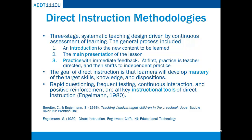The initial direct instruction model by Veriter and Engelman established a three-stage systematic teaching design driven by continuous assessment of learning. The general process included an introduction to the new content to be learned, the main presentation of the lesson, and practice with immediate feedback. At first, practice is teacher-directed, with the entire class responding to quickly paced, strategically sequenced questions from the instructor.